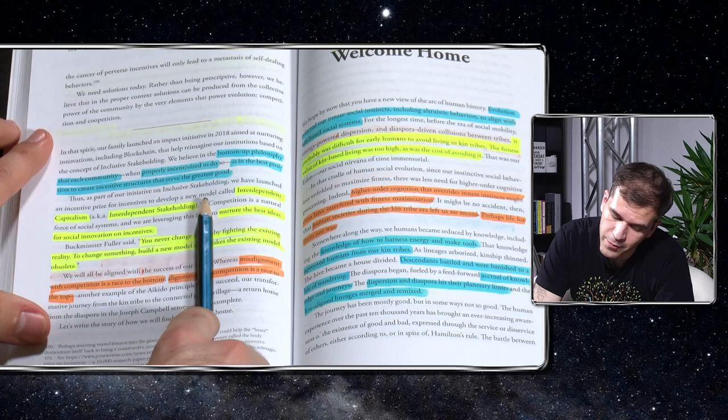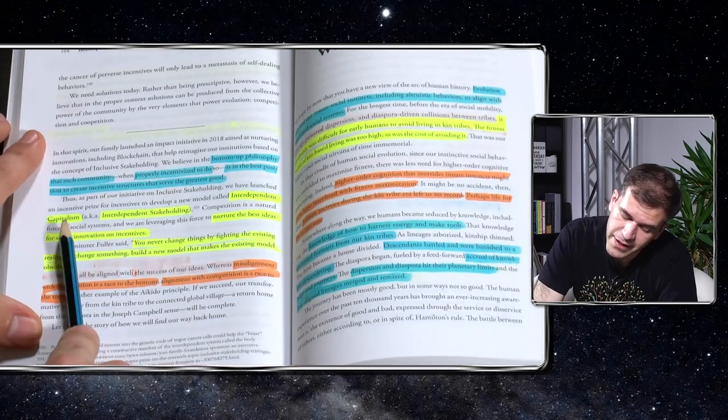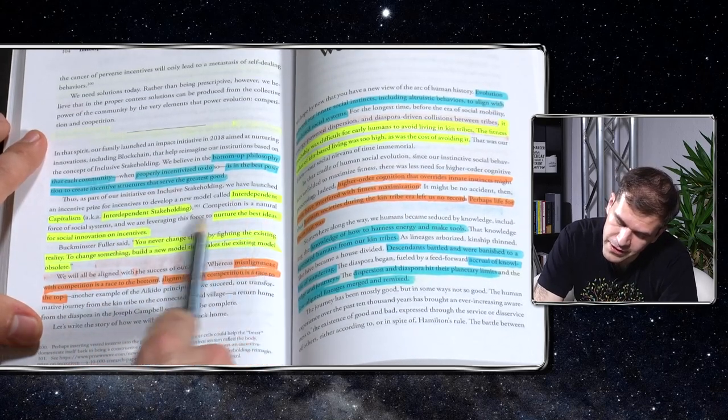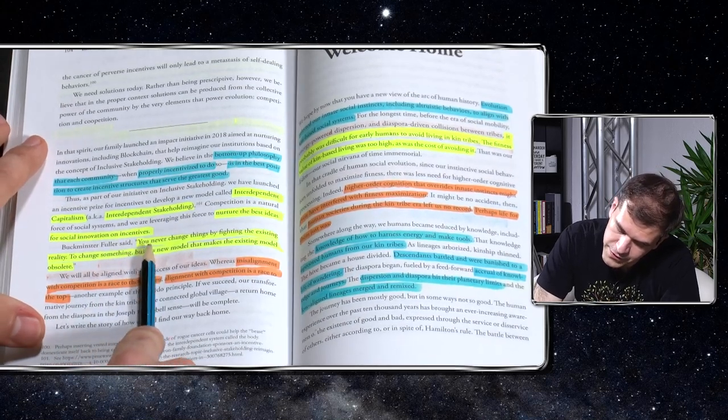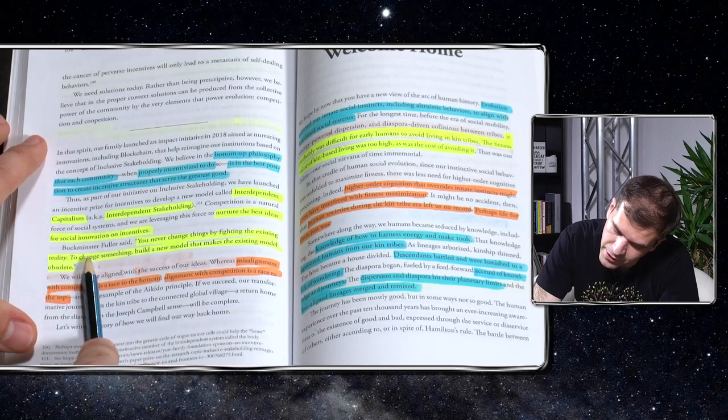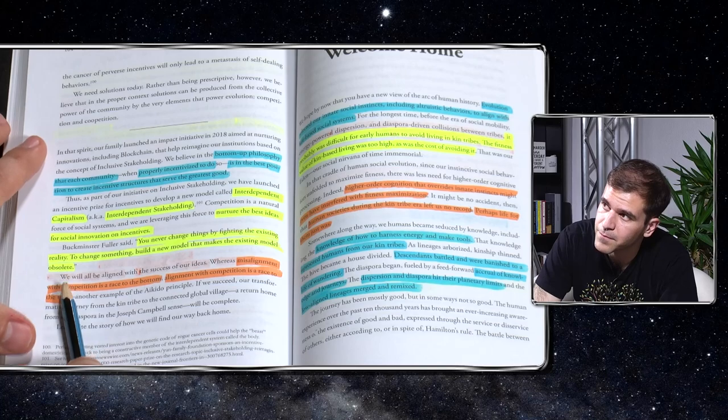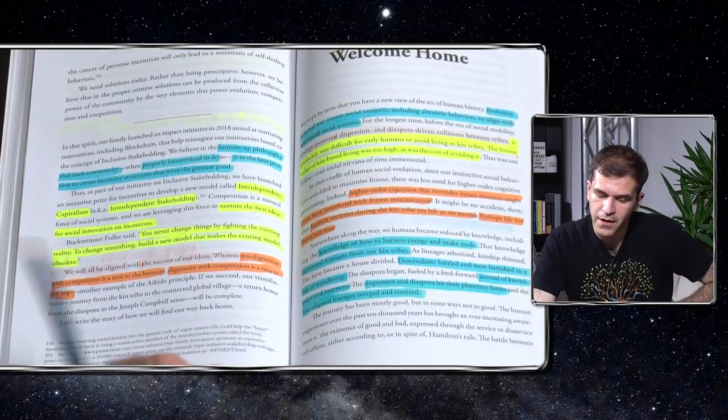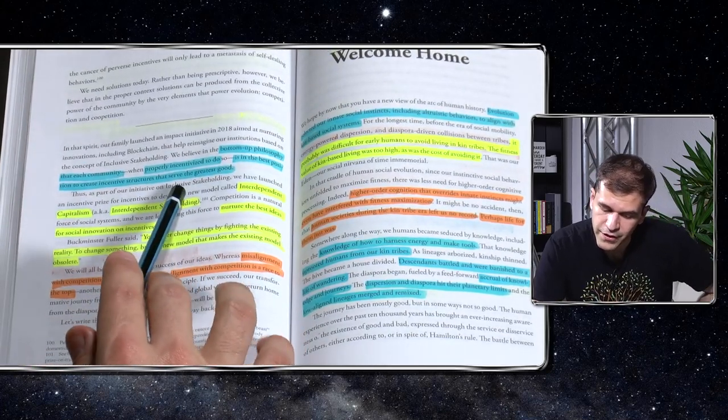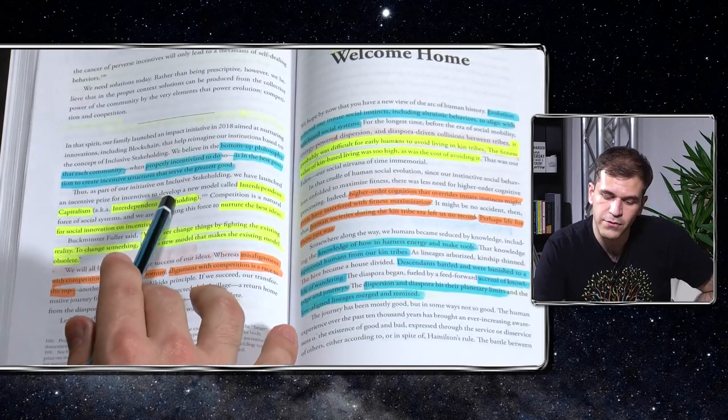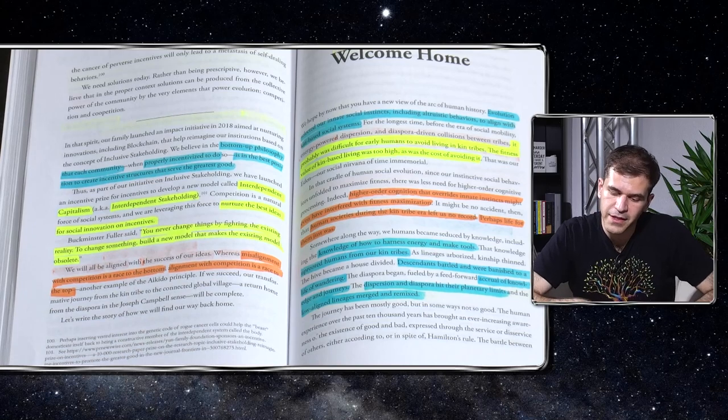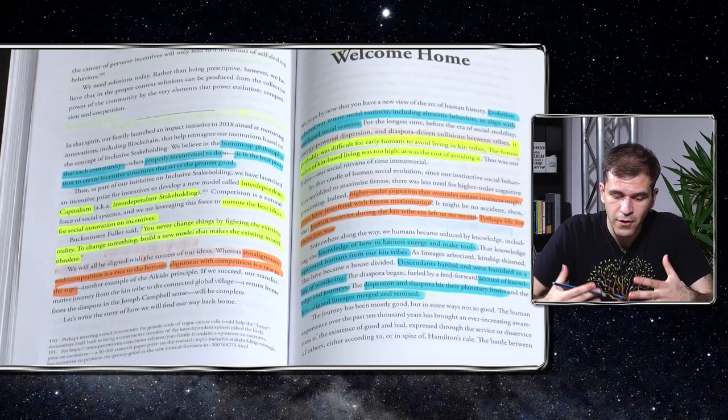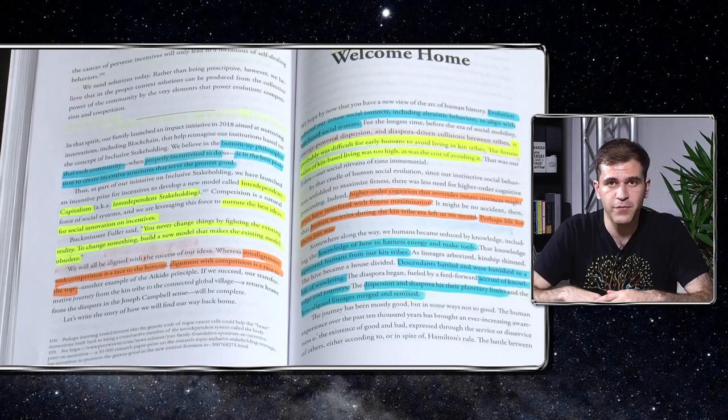Bottom-up philosophy that each community, when properly incentivized to do so, is in the best position to create incentive structures that serve the greatest good. They've launched an incentive prize for incentives to develop a new model called interdependent capitalism, a.k.a. interdependent stakeholding. Competition is a natural force of social systems. We are leveraging this force to nurture the best ideas for social innovation on incentives. Buckminster Fuller said you never change things by fighting the existing reality. To change something, build a new model that makes the existing model obsolete. Whereas misalignment with competition is a race to the bottom, alignment with competition is a race to the top. Again, remember in the initiative on inclusive stakeholding, they launched an incentive prize for incentives to develop a new model called interdependent capitalism. So you can partake in this, create your own models around interdependent capitalism and submit them to this incentive prize. It's a very good way to get involved and get your community involved, get your ideas out there.